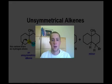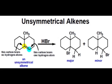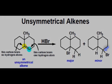In the previous example, we saw addition of hydrogen bromide to a symmetrical alkene, ethene. But what happens when we add hydrogen bromide to an unsymmetrical alkene, such as the one we see here? We'll learn about why the compound on the left is the major product while the compound on the right is the minor product.